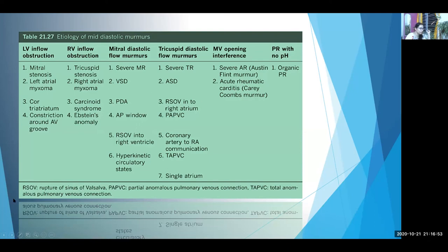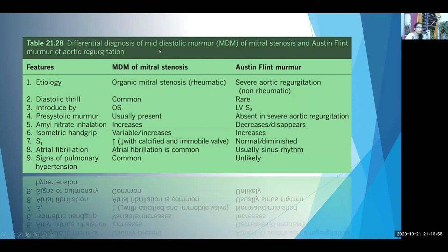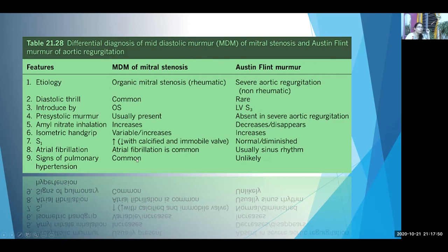Also remember that mitral stenosis produces a pre-systolic murmur — it starts at an interval after A2 and ends with S1, coming just before S1. How to differentiate mitral stenosis from Austin Flint murmur when both present as diastolic murmurs at the apex: if there is a diastolic thrill at the apex, it is most likely mitral stenosis. If you hear an opening snap, it is mitral stenosis; if you hear an S3, it is Austin Flint murmur. Pre-systolic accentuation occurs in mitral stenosis but not in Austin Flint murmur. Signs of pulmonary hypertension — parasternal lift, loud P2 — point to mitral stenosis.